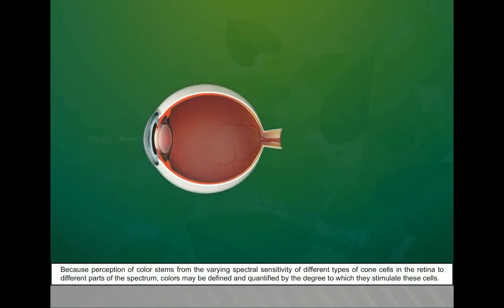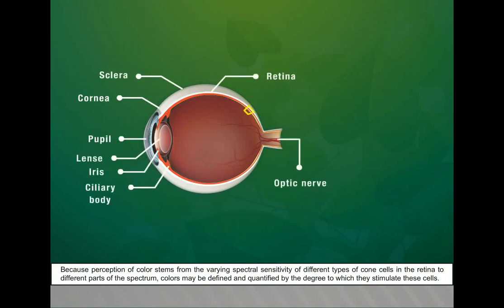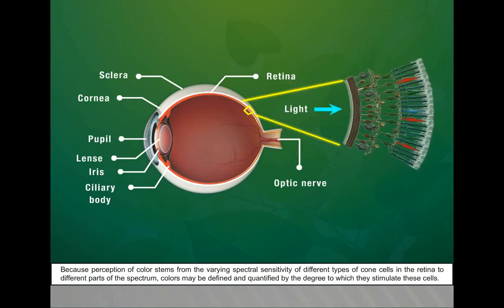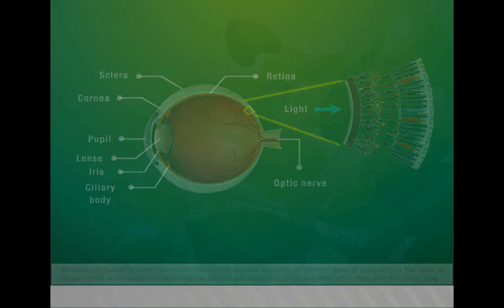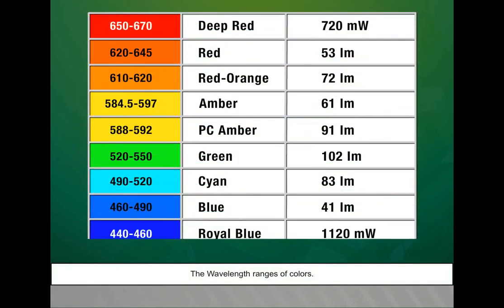Because perception of color stems from the varying spectral sensitivity of different types of cone cells in the retina to different parts of the spectrum, colors may be defined and quantified by the degree to which they stimulate these cells. The wavelength ranges for colors.